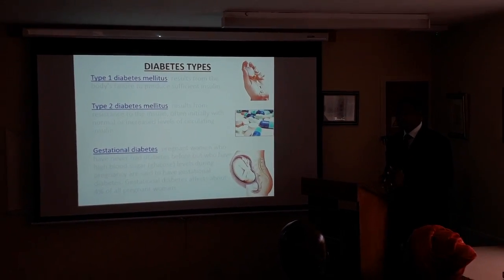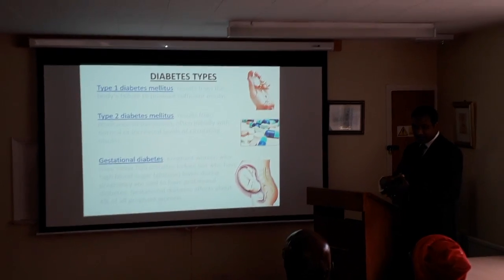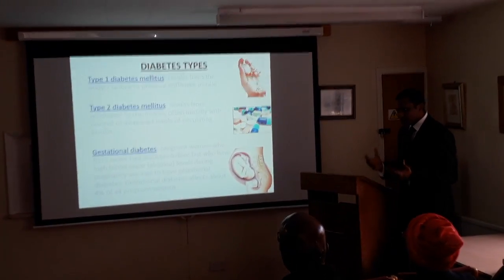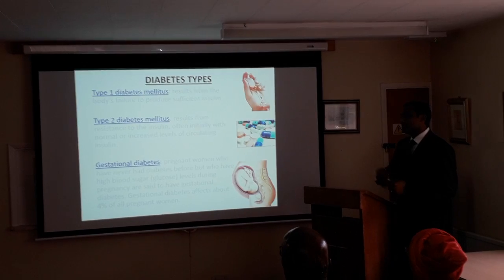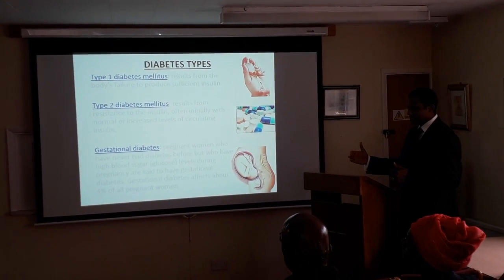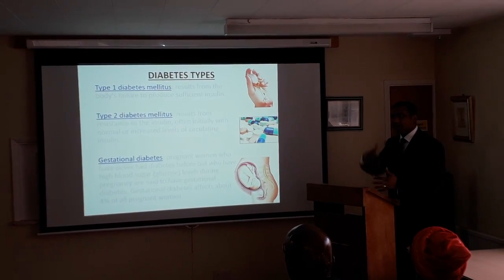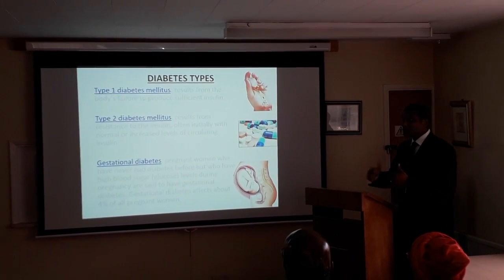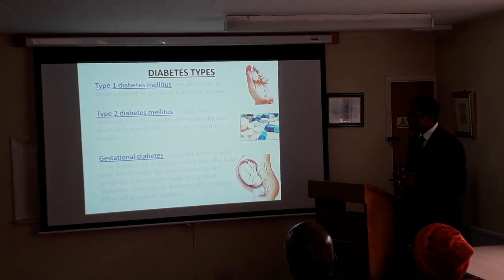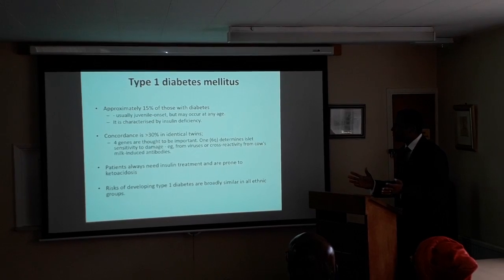The third type is gestational diabetes, which some women develop during pregnancy due to excess stress, additional body mass, and hormones. It is confined to the pregnancy, but interestingly it does increase the chance of becoming diabetic in the future, though it resolves once the stressor is removed.